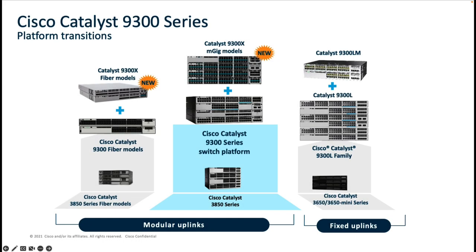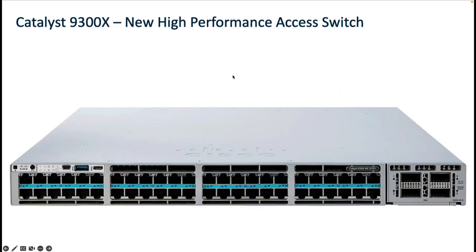In terms of platform transition, the Catalyst 9300X models are an extension to the existing Catalyst 9300 family with increased scale, bandwidth, and new hardware capabilities available both in fiber as well as copper variants. If we look at the network requirements today, those requirements have drastically evolved over the years wherein we observe multi-gigabit speeds have become a norm at the access layer to power Wi-Fi 6 or 6E based deployments.